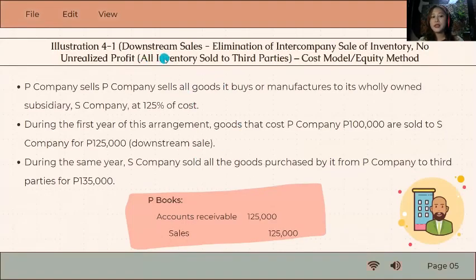For our first illustration, this is a downstream sale. So this means the parent sold inventory to the subsidiary wherein you'll have an eliminating entry. Regardless, if you can imagine, it says no unrealized here. But that doesn't mean you don't eliminate.